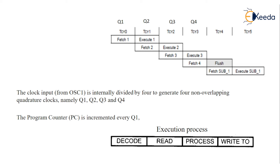The opcode is already available in program memory, so the microcontroller knows what to do with the instruction. Then it reads the data — whether it is literal data or an address. After that it starts to process; for example, if the program is for addition, the process carries out the addition of the two numbers.